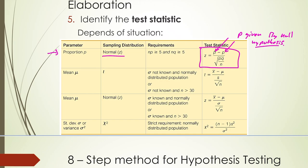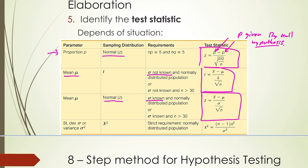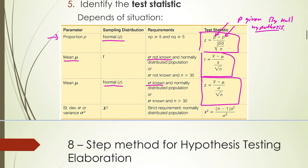If I'm testing a claim about a population mean, I use this T statistic — but only when I don't know the standard deviation, just like with confidence intervals. When I know the population standard deviation, it becomes normally distributed and I use the Z statistic. If you were required to prove a claim about standard deviation, you would use the chi-square distribution — which we'll talk about later in goodness-of-fit tests.